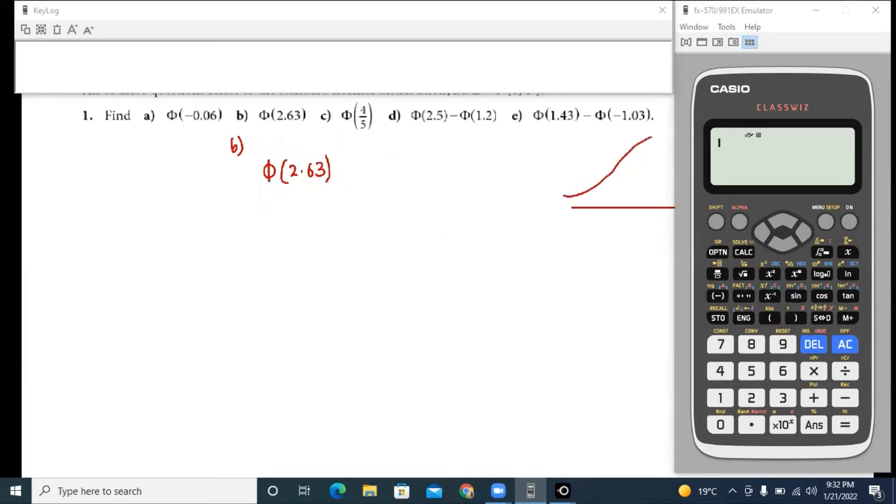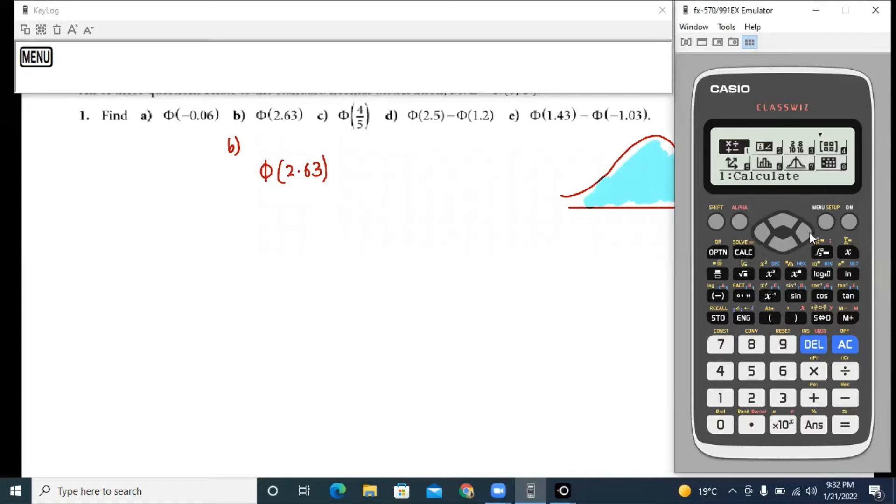It's reasonably simple to read this area. What you need to do on your calculator is you need to go to menu, then you need to go to the option which says distribution, then you go to the normal cumulative distribution, normal CD.